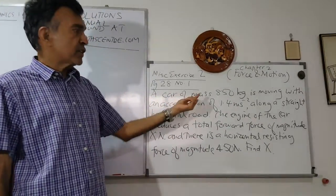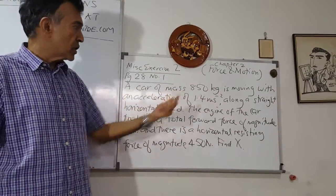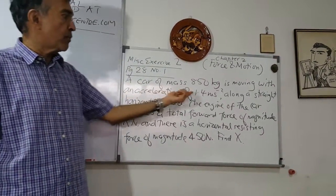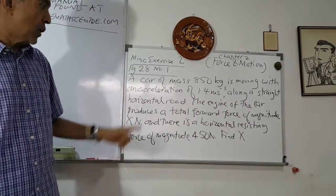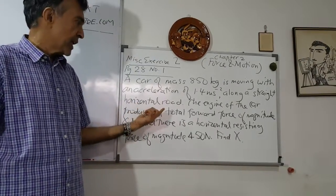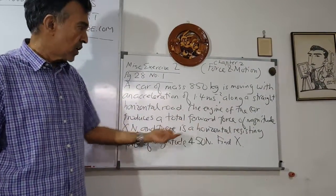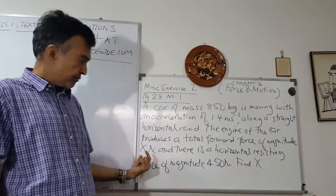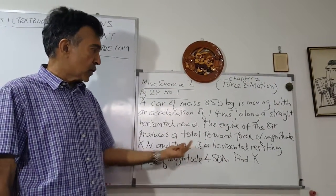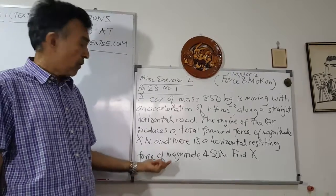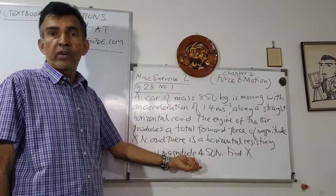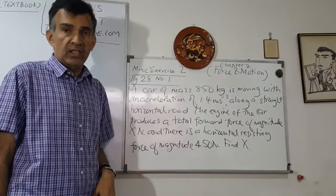A car of mass 850 kg is moving with an acceleration of 1.4 meters per second squared along a straight horizontal road. The engine of the car produces a total forward force of magnitude X Newtons, and there is a horizontal resisting force of magnitude 450 Newtons. Find X.